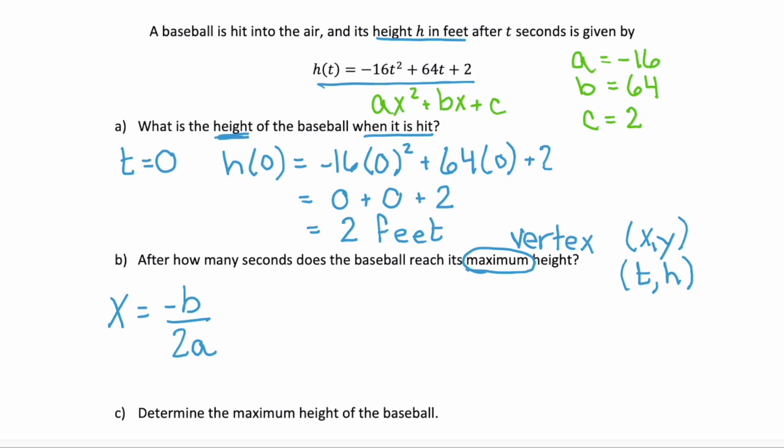So we're going to substitute these values in to find our value of x. So negative b would be negative 64 over 2 times a, which is negative 16. That simplifies to negative 64 over negative 32, which then simplifies to 2.